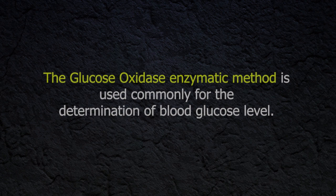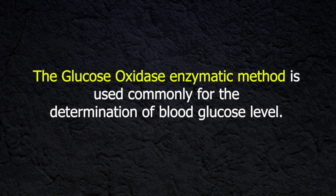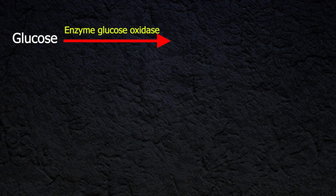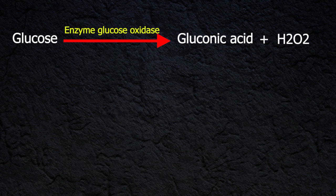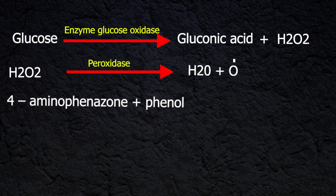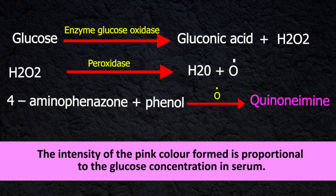Principle: The glucose oxidase enzymatic method is used commonly for determination of blood glucose level. Glucose in the serum is oxidized by the enzyme glucose oxidase to gluconic acid with liberation of hydrogen peroxide. The hydrogen peroxide is converted to water and molecular oxygen by the enzyme peroxidase. In the presence of an oxygen acceptor — 4-aminoantipyrine together with phenol — a pink-colored quinoneimine is formed, which is measured. The intensity of the pink color formed is proportional to the glucose concentration in serum.